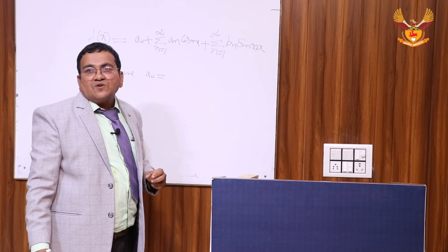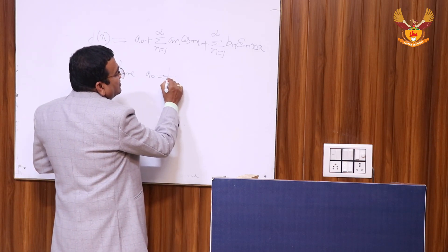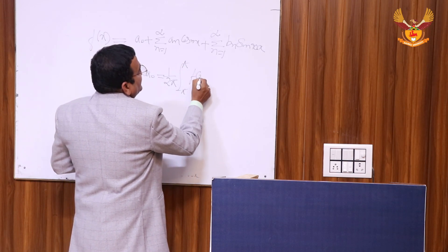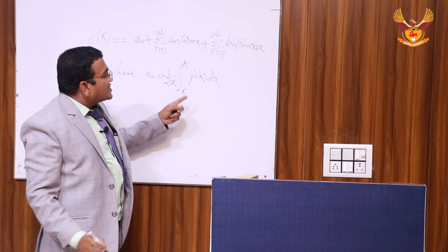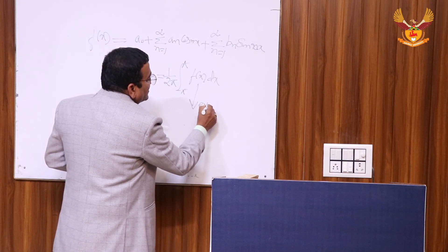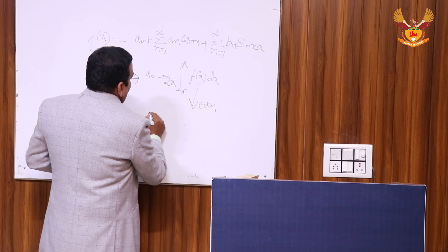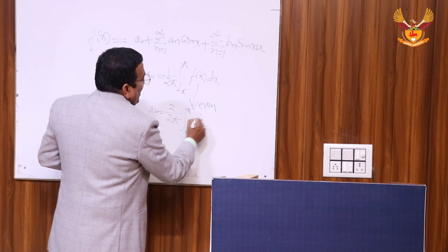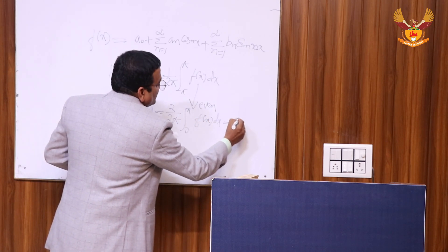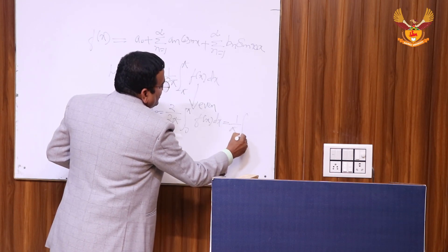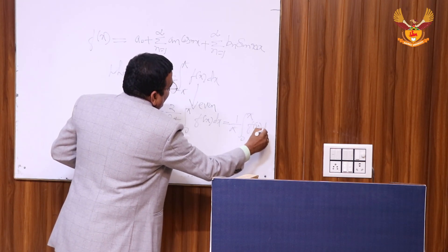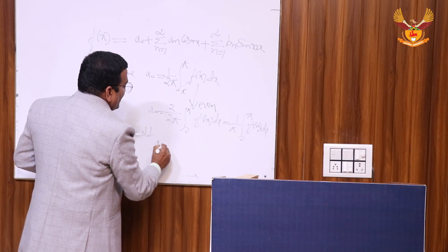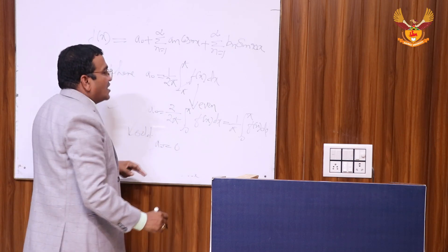Where a₀ = (1/2π) times the integral from -π to π of f(x) dx. If f(x) is an even function, then a₀ becomes (2/2π) times the integral from 0 to π of f(x) dx by property, which means a₀ = (1/π) times the integral from 0 to π of f(x) dx. In case f(x) is an odd function, then a₀ equals 0 because of the property of the odd function.